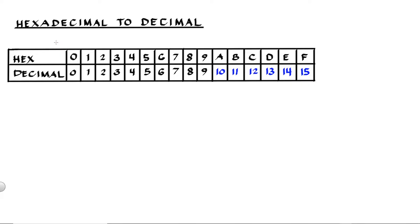Hey guys, this is Pingpoint. In this video, we will convert hexadecimal numbers into decimal numbers. Hexadecimal, or hex, is a positional number system with a base of 16. It has 16 distinct symbols from 0 to 9 and letters from A to F. A to F can also be in lowercase and represent values from 10 to 15 respectively.